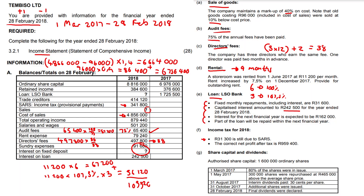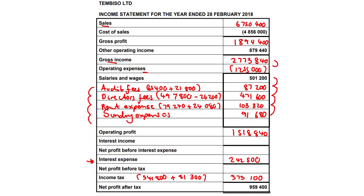Looking carefully, our interest income amount is unknown — that's our interest on fixed deposits, which is going to be our balancing figure. So let's keep working down. We know our operating profit is 1,518,840, and we don't know interest income, but we can work from the bottom upward.